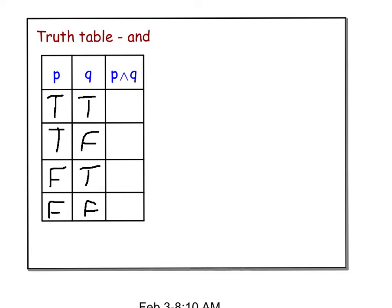For AND to be true, both statements have to be true. So here in the first column, I have P is true and Q is true. So P AND Q is true.